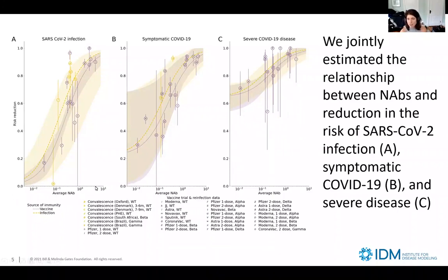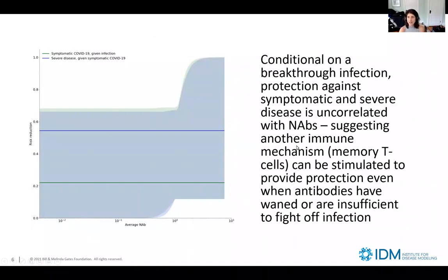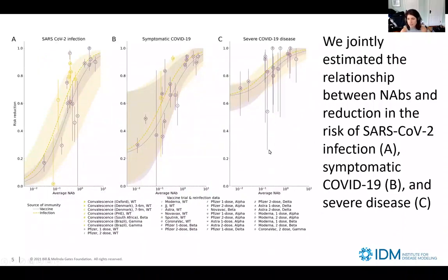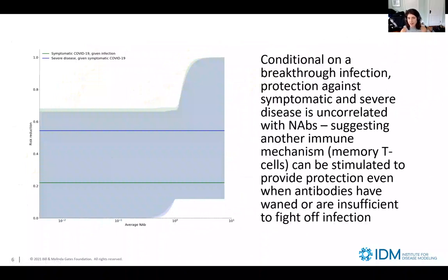There is quite a strong relationship between neutralizing antibodies and reduction in infection and disease — as NAb response increases, risk of infection and disease decreases. However, conditional on a breakthrough infection, protection against symptomatic and severe disease appears uncorrelated with neutralizing antibodies. This flat line suggests some other immune mechanism — probably memory T cells — can be stimulated to provide protection even when antibodies have waned or are insufficient to fight off infection.